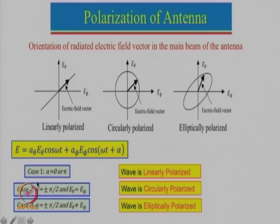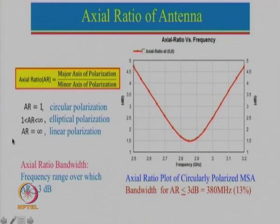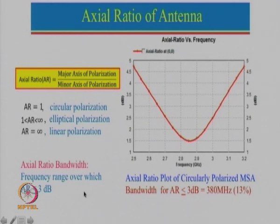Then we talked about the different types of polarization: linear polarization, circular polarization, elliptical polarization, and then we defined axial ratio for a circularly polarized antenna. Ideally axial ratio can be 0 dB or 1, but practically we take up to about 3 dB. Axial ratio bandwidth is generally defined as the frequency range over which axial ratio is less than 3 dB.